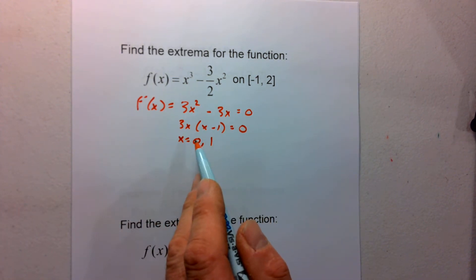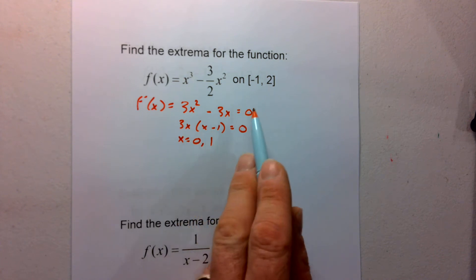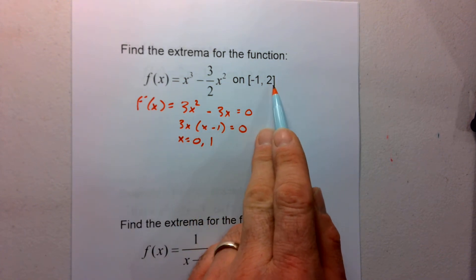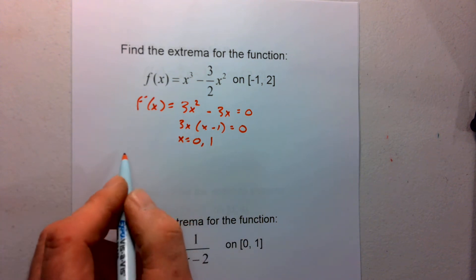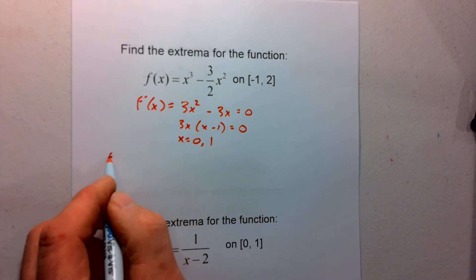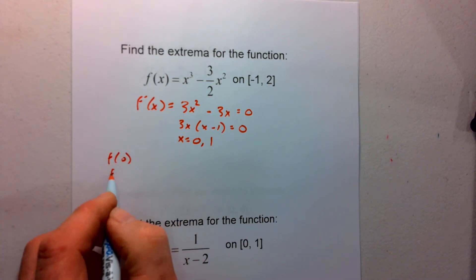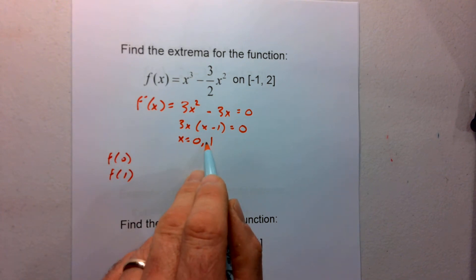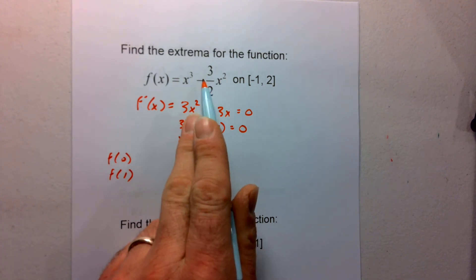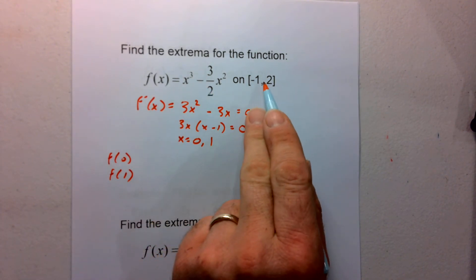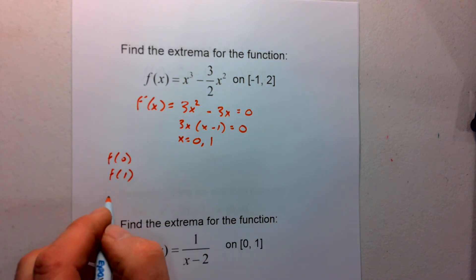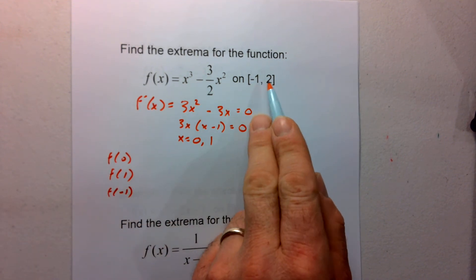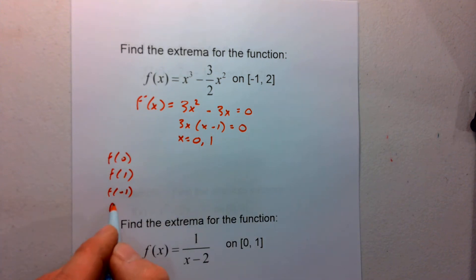The next thing I want to do is make sure that these two critical values are on the interval from negative 1 to 2. Since they are, I'm going to go ahead and find f(0) and f(1) — the values at my two critical points of the original function — and also the values at the endpoints of the interval: f(negative 1) and f(2).